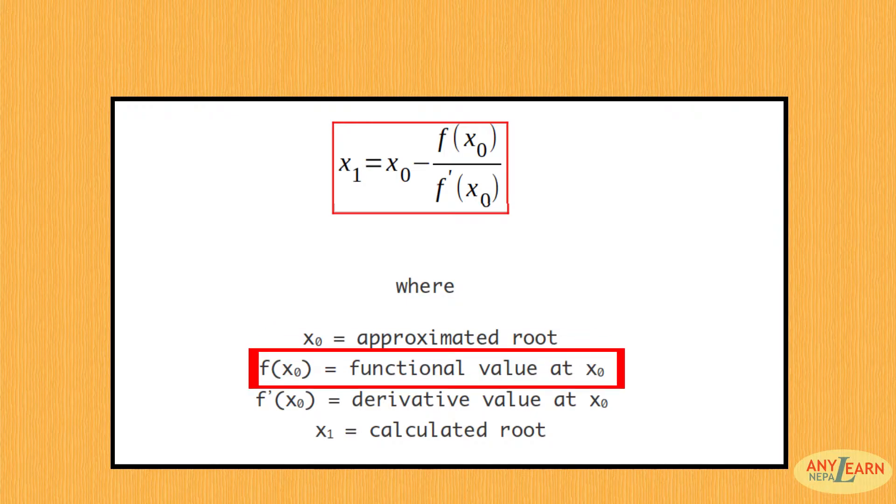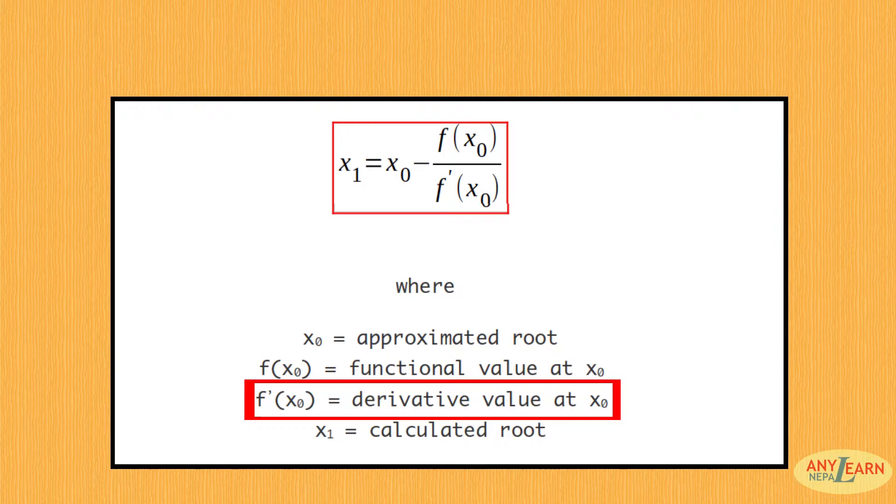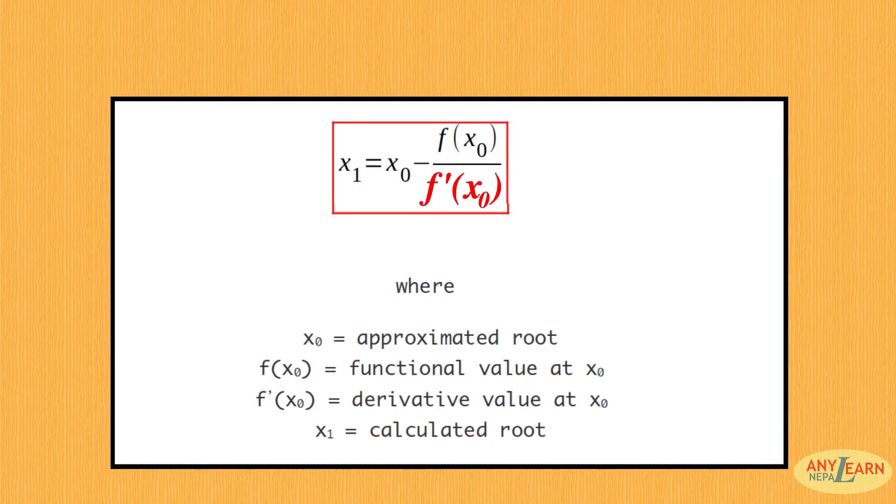For your information, x0 is the approximated root which is the starting value to find the root. f is the function and f' is the derivative of that function, and x1 is the calculated root. That means first we have to provide the approximated root, then using functional value and derivative of that function at that root, we get x1 as our new root which is closer to the actual root. Now using x1, we repeat the process and find x2.